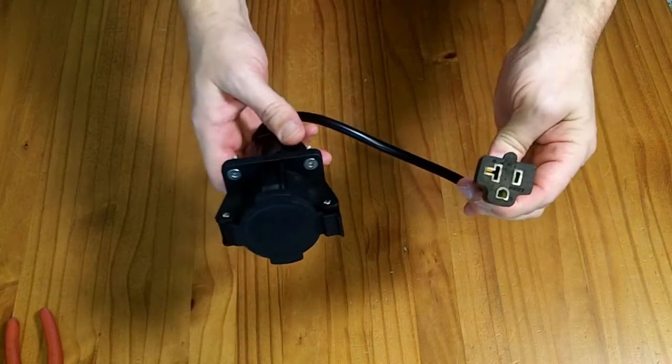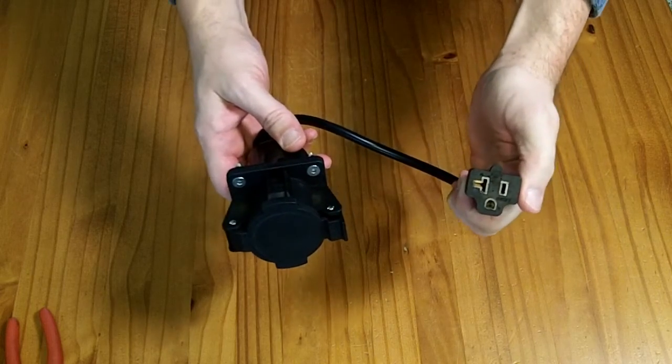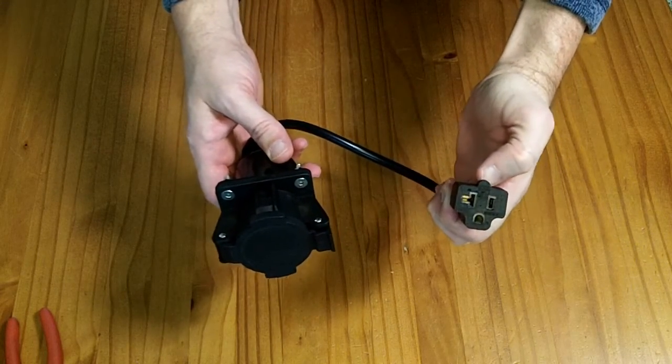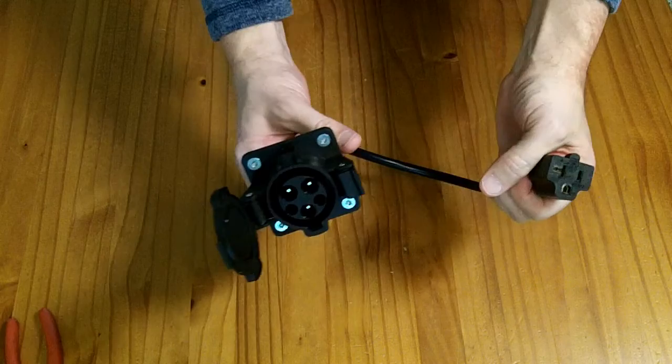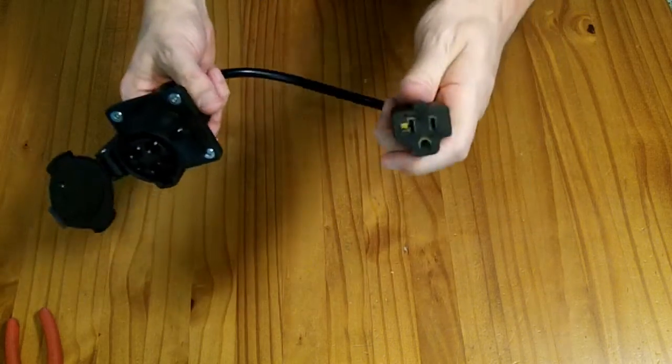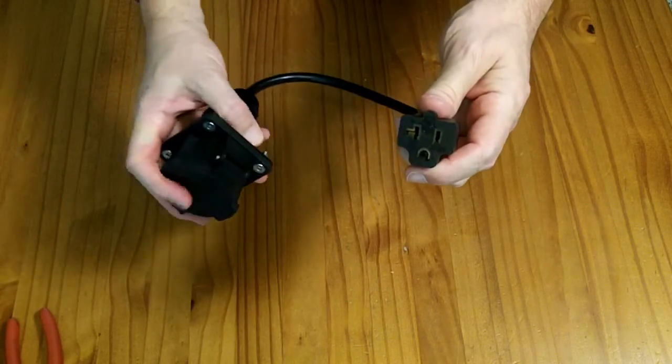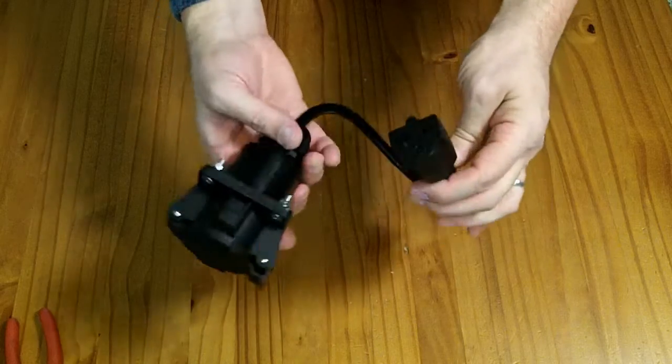Okay, so if you want to charge something that has lower current, less than 16 amps, 12 amps preferably, off of a J1772 adapter, and it works at 200 volts, this adapter will work for you.